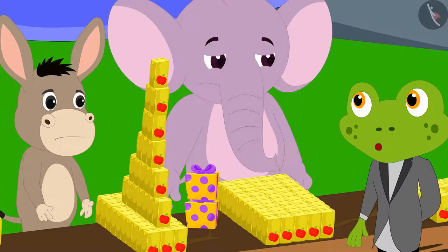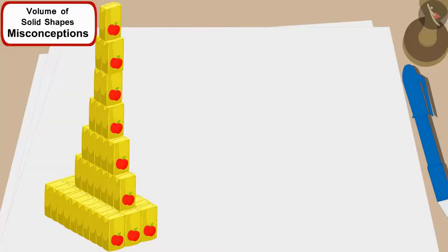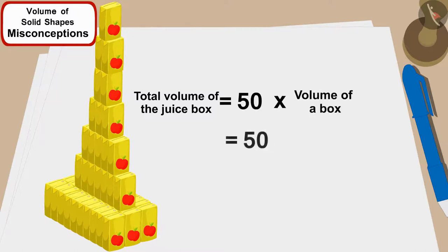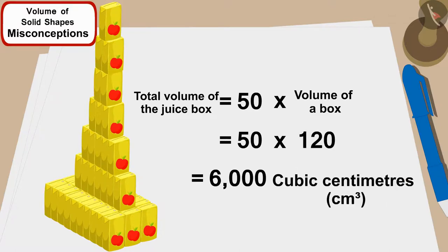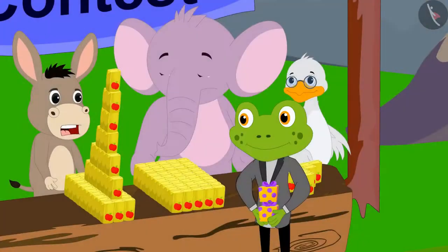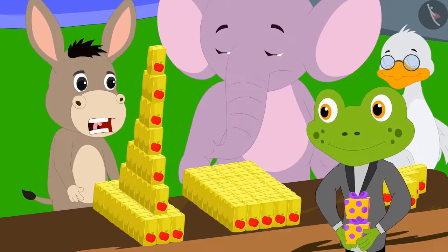50 cartons have also been used in Bhola's shape, so the total volume of juice used in his shape will also be equal to 50 multiplied by 120, that is 6,000 cubic centimeters, Appu said.